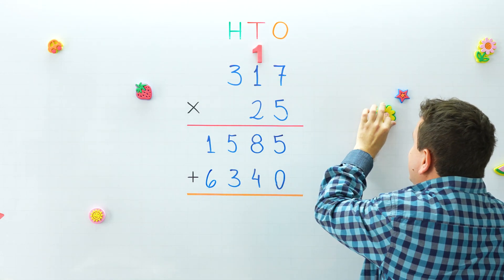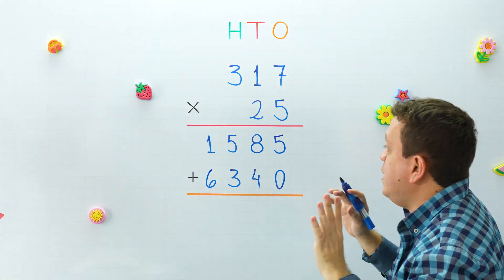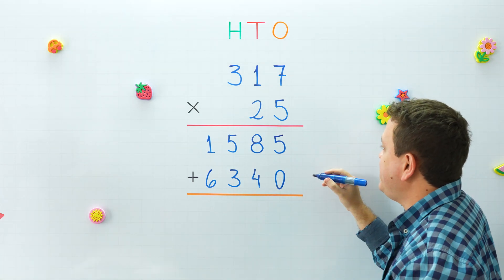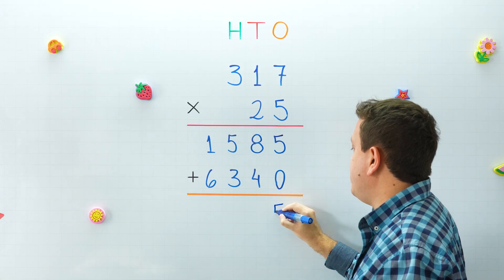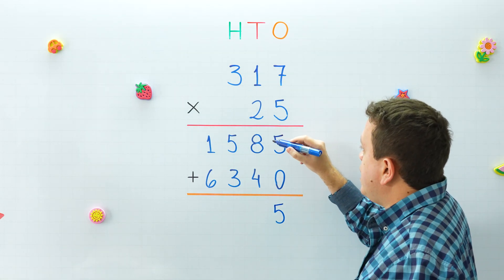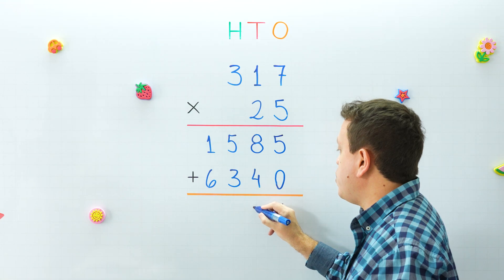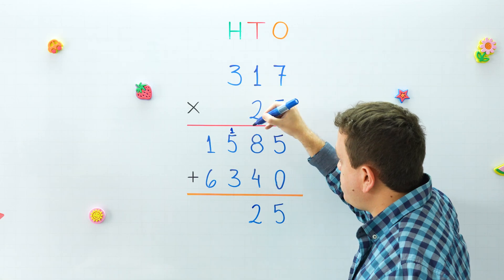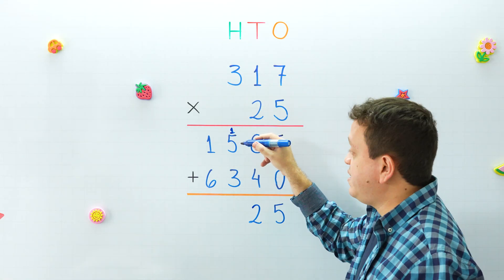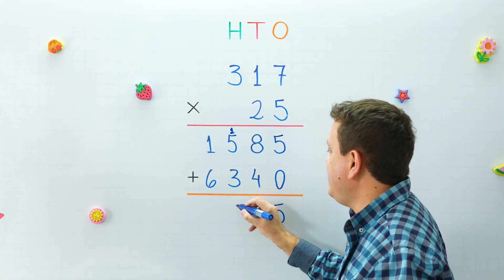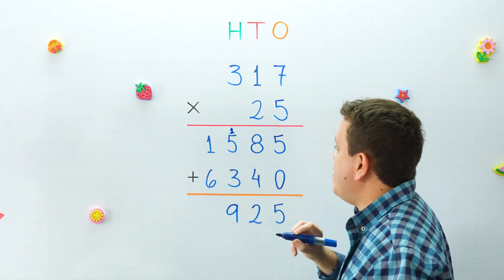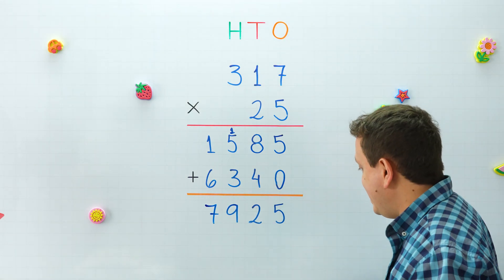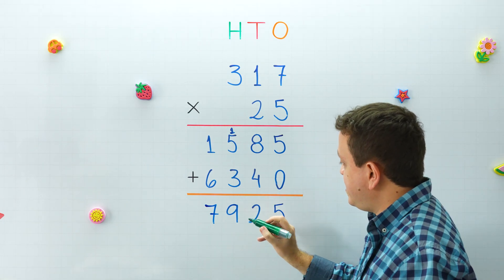In the third step we just need to add these two numbers together to get our final answer. Five plus zero is five. Eight plus four is 12 — put the two and carry the one. One plus five is six, plus three is nine. One plus six is seven. Our final answer is 7,925.